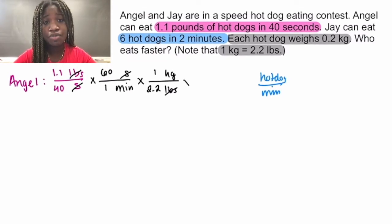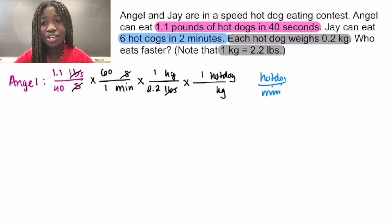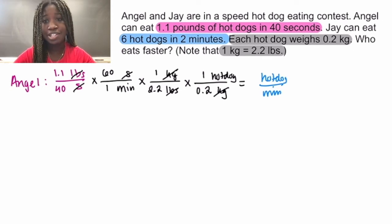Now let's use our final piece of information and put kilograms at the bottom and hot dogs on top. We know that 1 hot dog is 0.2 kilograms, and the kilograms will cancel and we're finally in hot dogs per minute. However, now we use multiplication and simplification in order to find the exact rate.